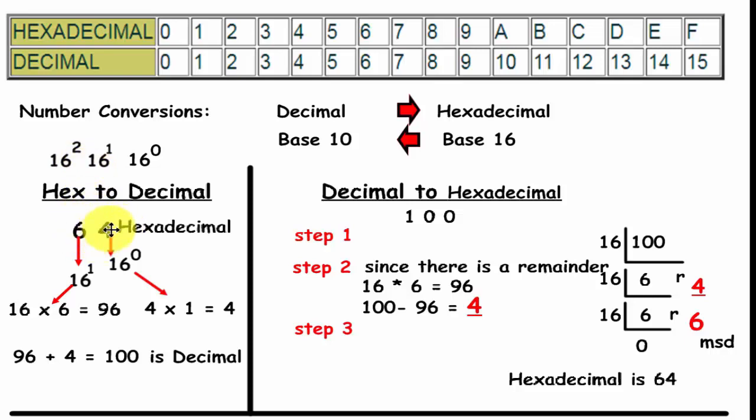Very quickly again, 64 the first number you're going to have it go to the power of 0. So in this case 4 times 1 equals 4. The second number 6 is going to go to the power of 1. So it will be 16 times 6 which is 96. Add those two numbers together.